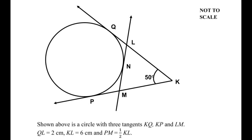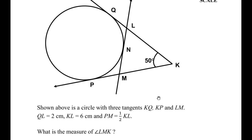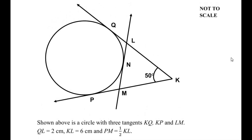Hello and welcome to my channel. In this video we are going to solve an example from geometry. Shown above is a circle with three tangents KQ, KP, and LM. QL is given as 2 centimeters, KL is 6 centimeters, and PM is half of KL. We have to find the measure of angle LMK.